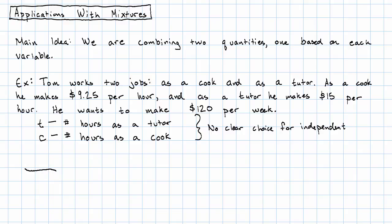The amount that he makes each week is going to be the amount he makes as a tutor plus the amount he makes as a cook, and we want that to total $120. How much does he make as a tutor? $15 per hour times t hours is 15t. How much does he make as a cook? $9.25 per hour times c hours is 9.25c.